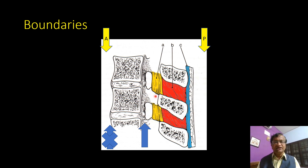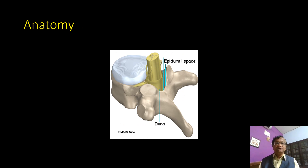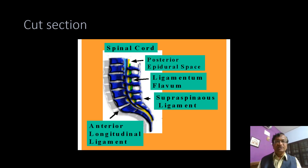You can see here — this is the ligamentum flavum and the intervertebral disc. The epidural space is circular. There is a posterior epidural space and an anterior epidural space. The anterior boundary is the posterior longitudinal ligament. The posterior epidural space is bounded by the ligamentum flavum, while the posterior longitudinal ligament forms the anterior wall. I am not concerned with the anterior longitudinal ligament, as it is nowhere near the epidural space.